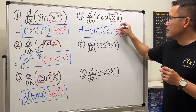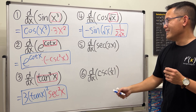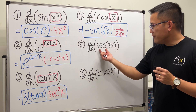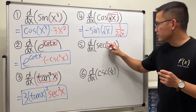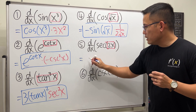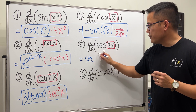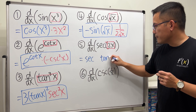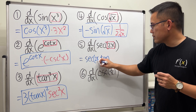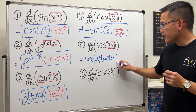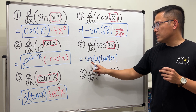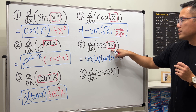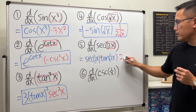The derivative of secant — you first repeat it: secant of the box times tangent of the box. Here we have secant of 2x times tangent of 2x. The derivative of secant is secant of the inside times tangent of the inside, then use the chain rule — the derivative of 2x is 2, so multiply by 2.